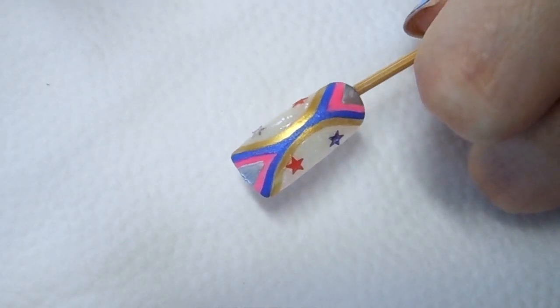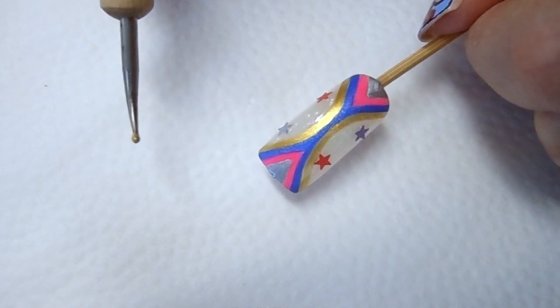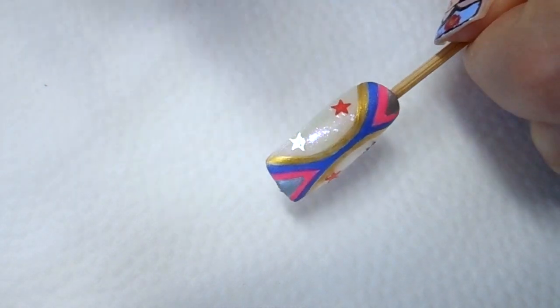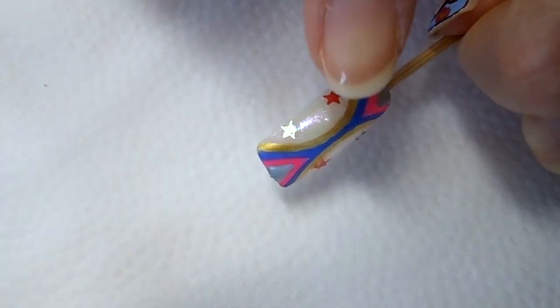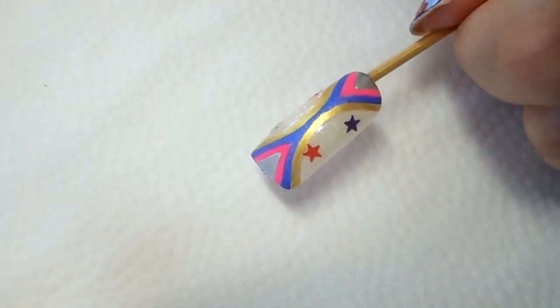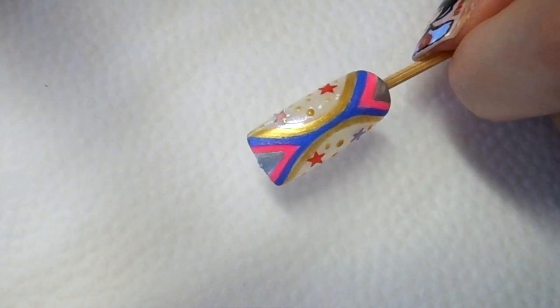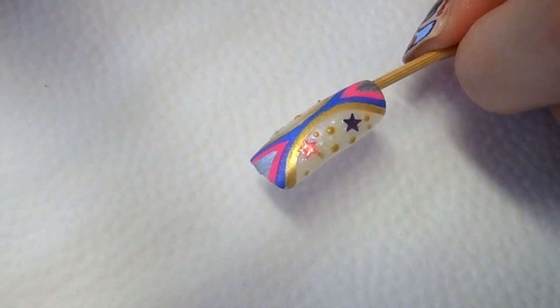Now just let this completely dry and come back to the next step. Use the small side to dip into the gold acrylic paint and add some dots right here on the right side as well as the left side. Now let this completely dry and come back with the next step.